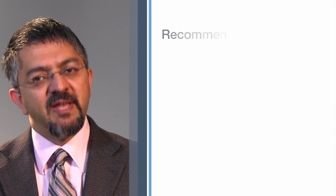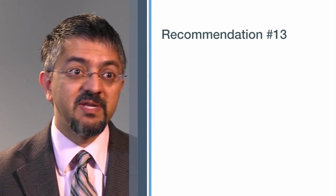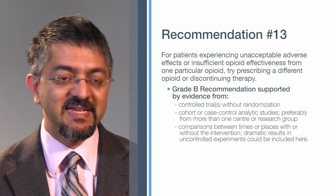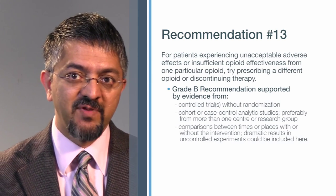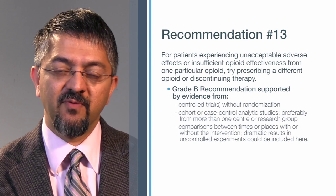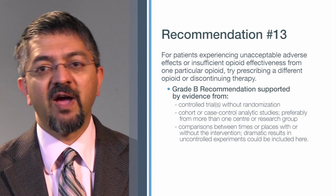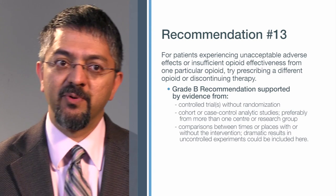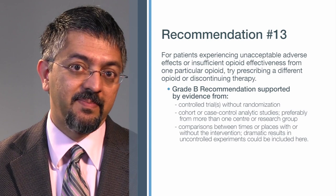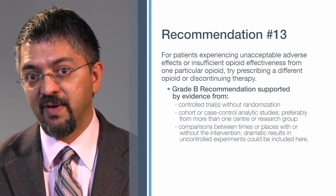The Canadian Opioid Guideline recommendation number 13 states that for patients experiencing unacceptable adverse events or insufficient opioid effectiveness from one particular opioid, try prescribing a different opioid or discontinuing therapy altogether. This has been rated as a grade B level of evidence.